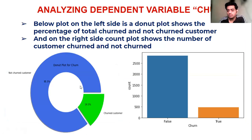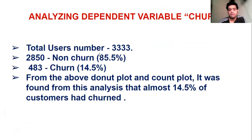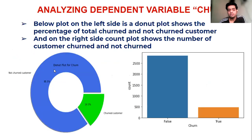Analyzing the dependent variable 'churn,' a donut plot shows percentages and a count plot shows counts. The total dataset has 3,333 customers, of which 2,850 are non-churned and 483 are churned. The donut chart shows approximately 15% of customers are churned and 85% are not churned.